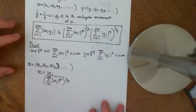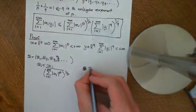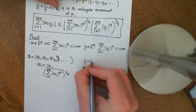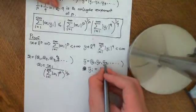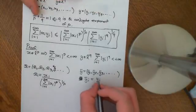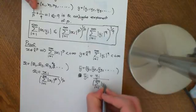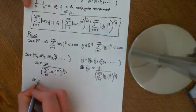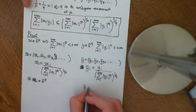That's perfectly well defined because X is an element of LP, so that summation is a finite real number, and its 1/p power is another finite real number. Next, I define ȳ_i similarly: take every element of the sequence Y and divide by the quantity (sum from i=1 to infinity of |y_i|^q)^(1/q). So ȳ = (ȳ₁, ȳ₂, ȳ₃, ...) where ȳ_i = y_i divided by (sum from i=1 to infinity of |y_i|^q)^(1/q).